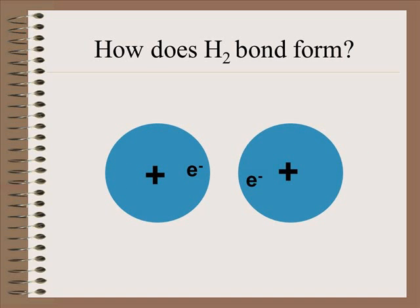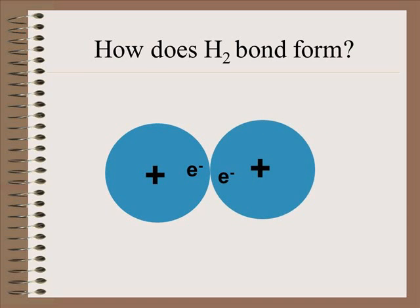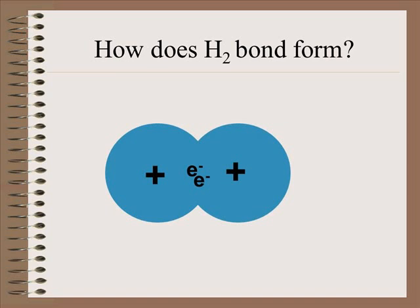By doing that, they pull themselves closer together until they reach an optimal distance where each atom believes that it has full custody of those two electrons in its outer orbital and has that helium electron configuration.